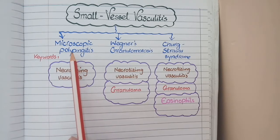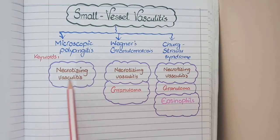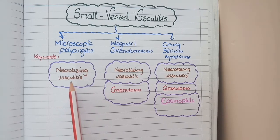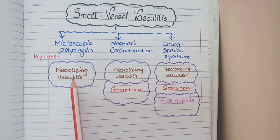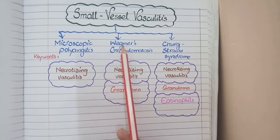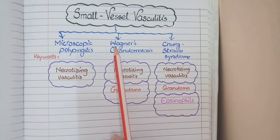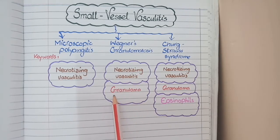The first of these is microscopic polyangitis, the main feature of which is necrotizing vasculitis. Necrotizing means fibrinoid necrosis, and vasculitis — 'itis' means inflammatory cells. The second disease is Wegener's granulomatosis, in which in addition to necrotizing vasculitis there is presence of granulomas. The word Wegener's granulomatosis itself contains the word granuloma.